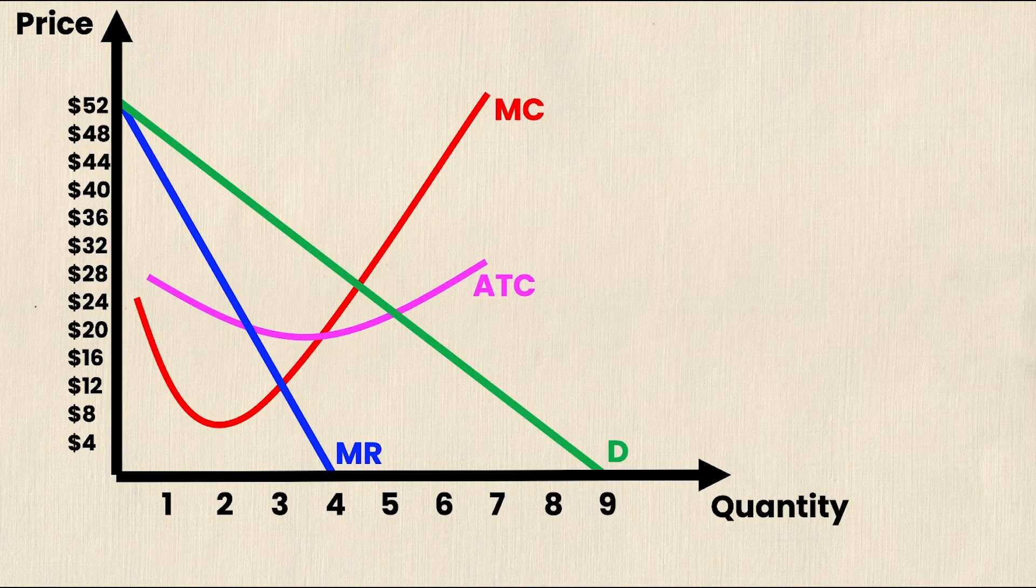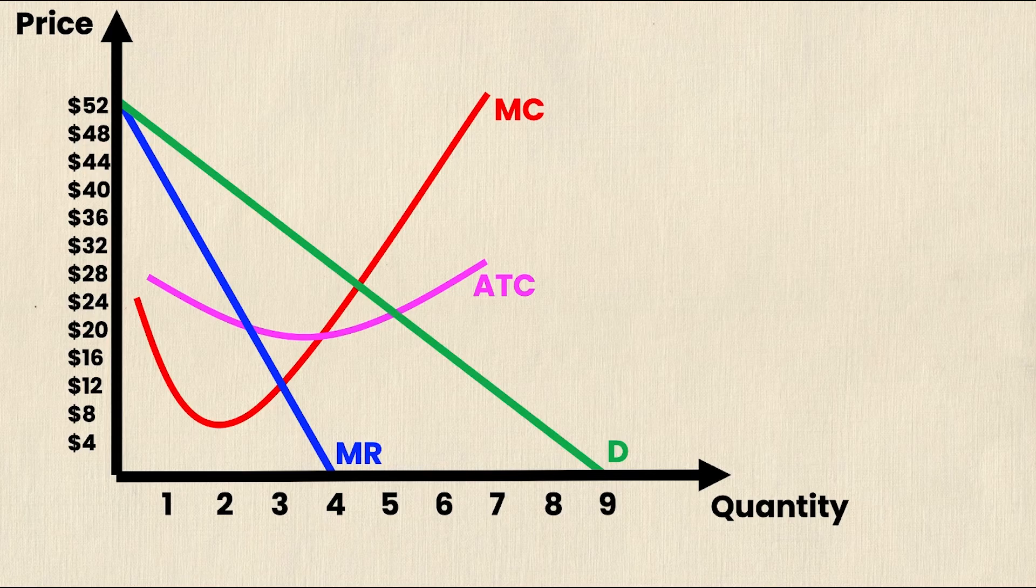So here we have a general monopoly graph. We have the marginal cost curve, the marginal revenue, the average total cost, and the demand curves.